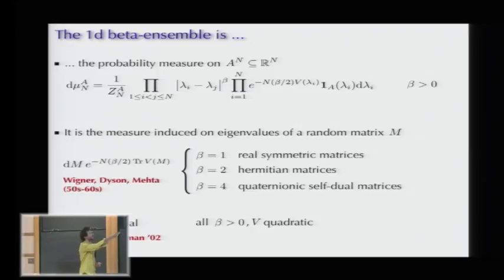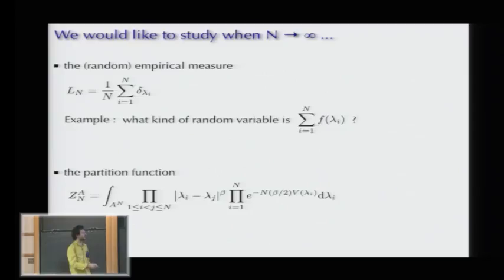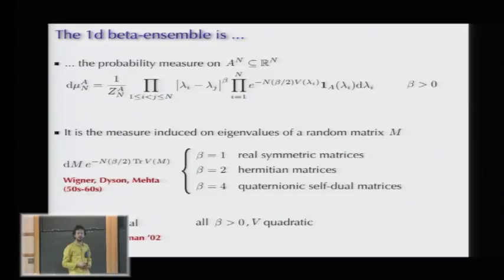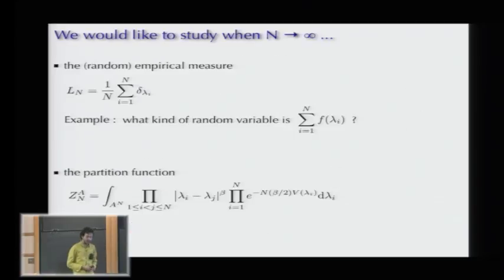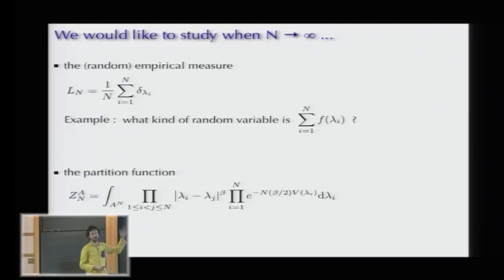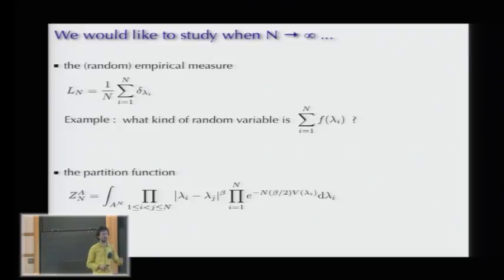I want to study this as a statistical mechanics problem. The questions I want to ask are: when n, the number of particles, is large, what kind of random measure is this empirical measure—which is 1/n times the sum of Dirac masses at the lambda_i's? And second, how does the partition function behave when n goes to infinity?